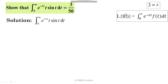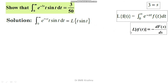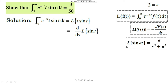By the definition of the Laplace transform, the integral from 0 to infinity of e^(−st) · f(t) dt equals L{f(t)}. Excluding e^(−st), the remaining part is t · sin(t), so this is the Laplace transform of t · sin(t). We know that L{t · f(t)} = −d/ds[F(s)], so this equals −(d/ds) of L{sin(t)}. Since L{sin(at)} = a/(s² + a²), we have L{sin(t)} = 1/(s² + 1).